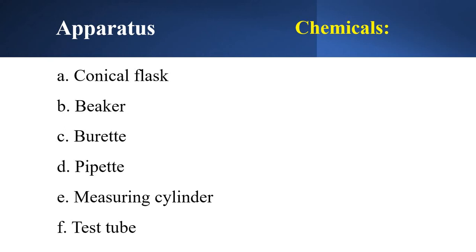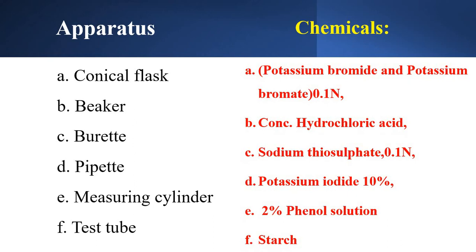The chemicals needed are: potassium bromide and potassium bromate — that is, brominating mixture 0.1 normal; concentrated hydrochloric acid; sodium thiosulfate 0.1 normal; potassium iodide 10% solution; and 2% phenol solution. We are using starch as an indicator in this titration.